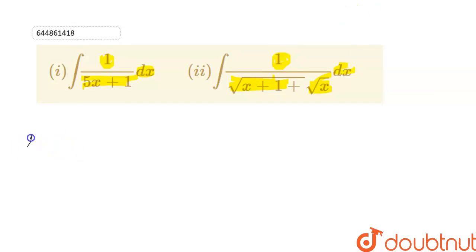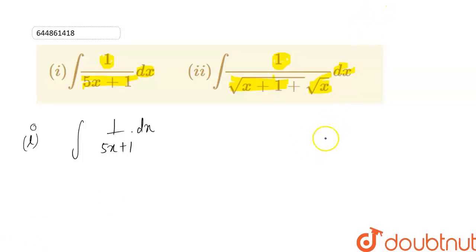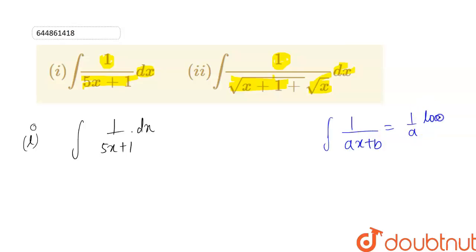Let's solve the first part. The first part is the integration of 1 divided by (5x + 1) dx. To solve this integration, we use the formula: integration of 1/(ax + b) is equal to (1/a) log|ax + b| plus c. This is the formula for integration of (ax + b).